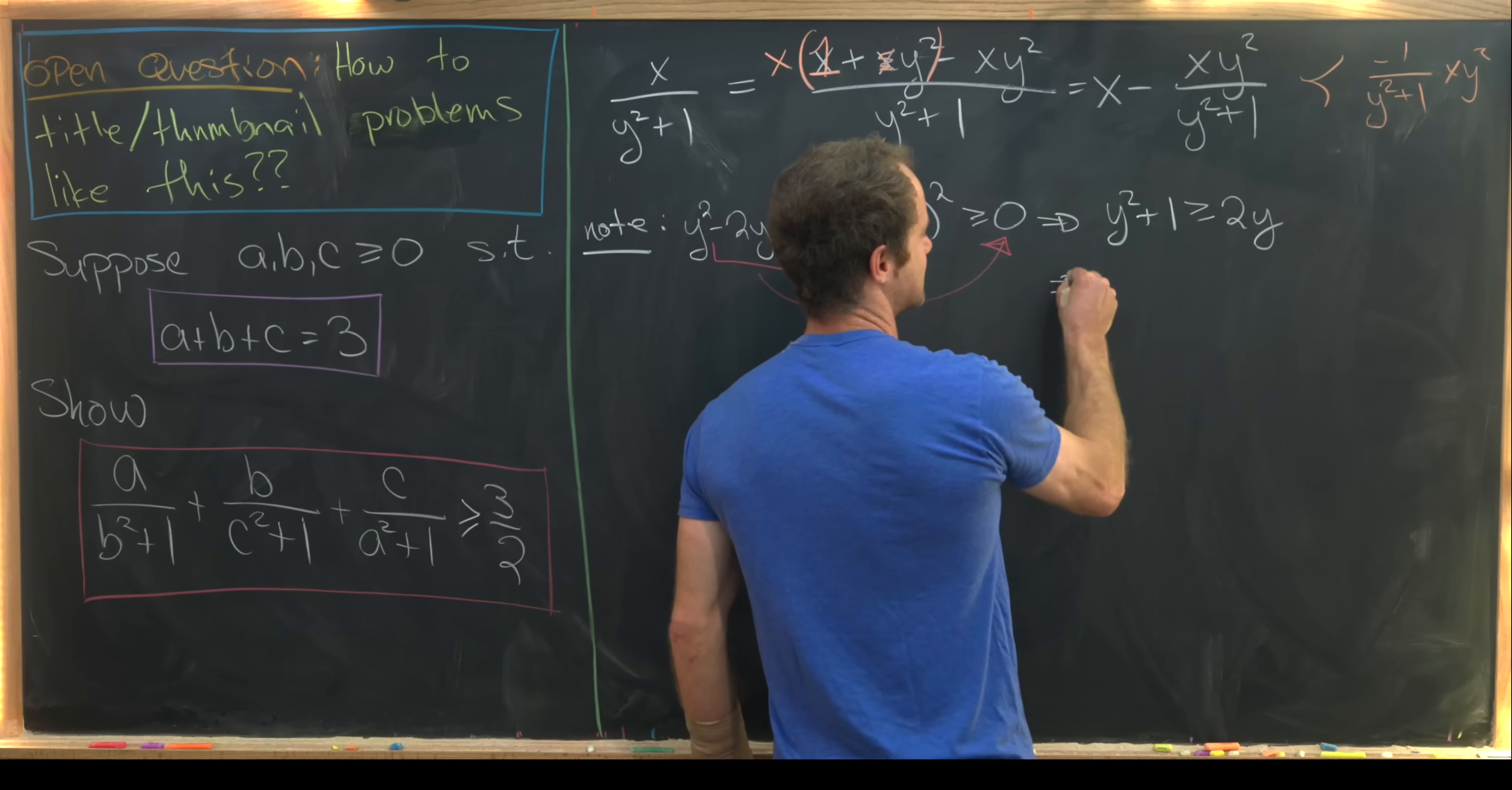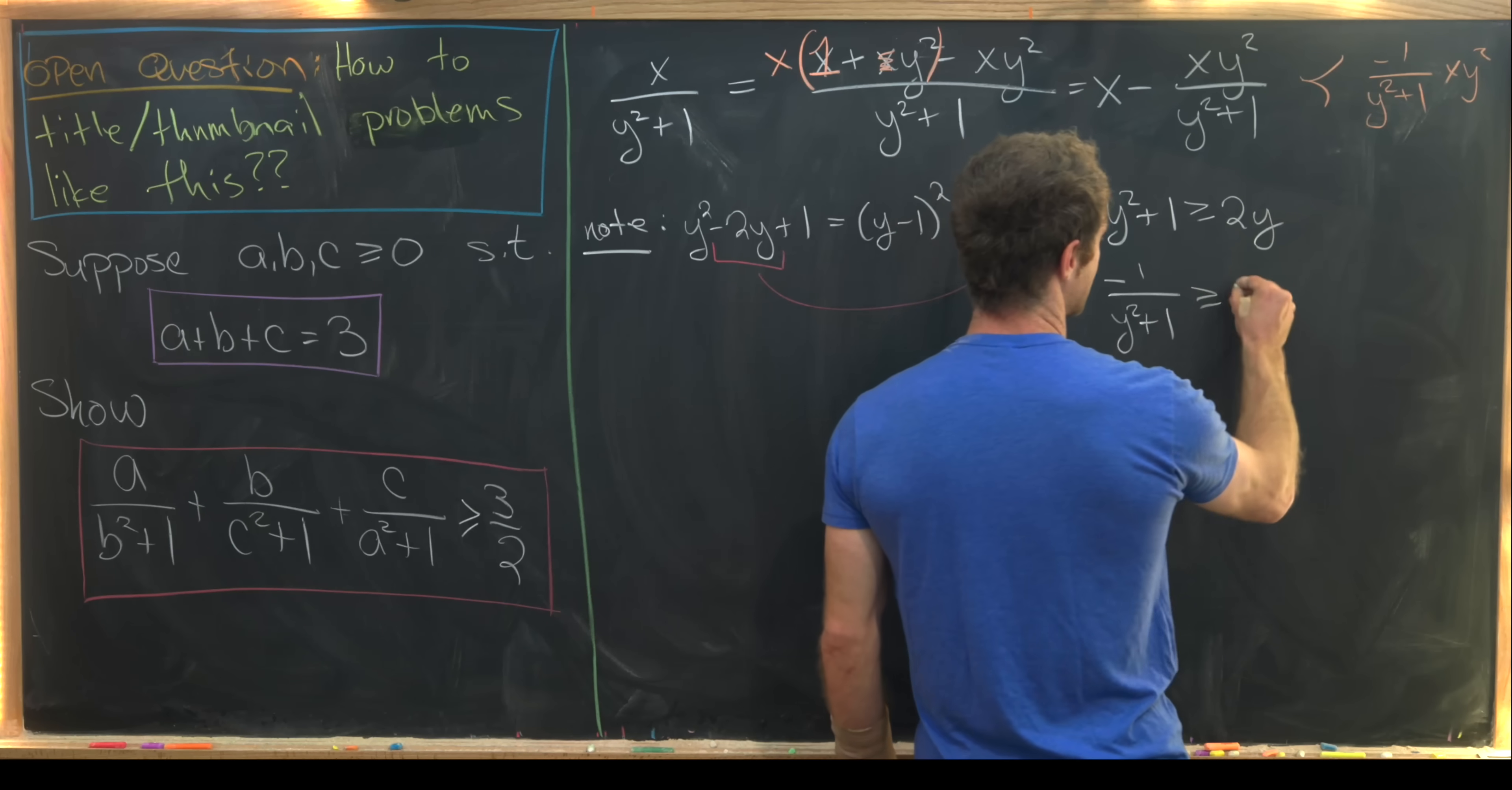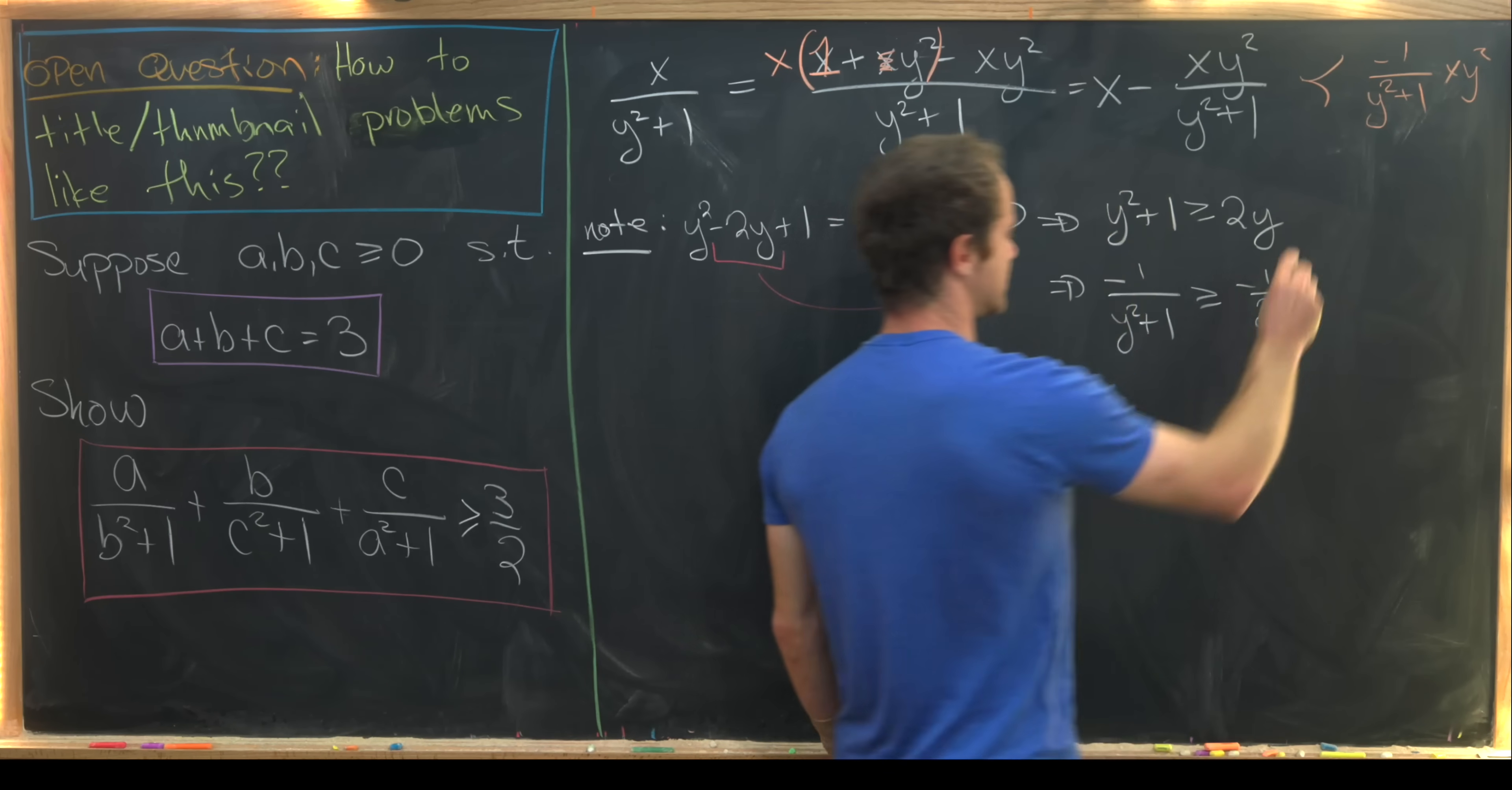So that'll leave us with minus 1 over y squared plus 1 is bigger than or equal to minus 1 over 2y.